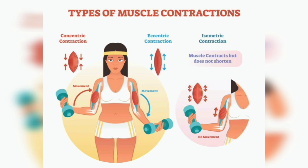First we should know the basics of muscle contraction. The first type is concentric contraction — when the lady is lifting the dumbbells, the muscle contracts and bulges. There is no extension in concentric contraction. The second type is eccentric contraction — when lowering the dumbbells, both contraction and extension take place simultaneously. So extension plus contraction together is called eccentric contraction.